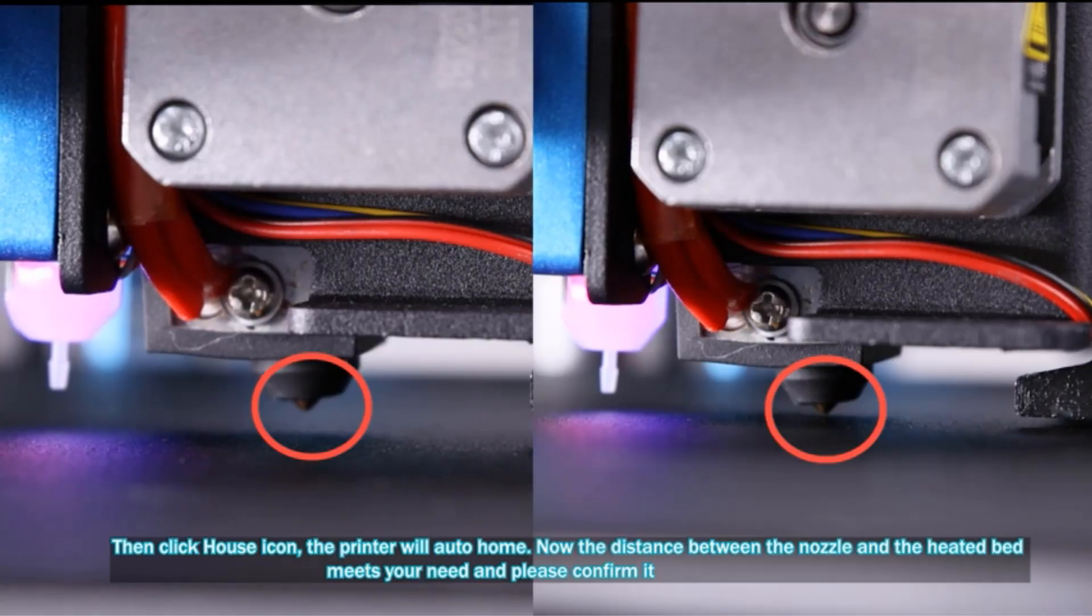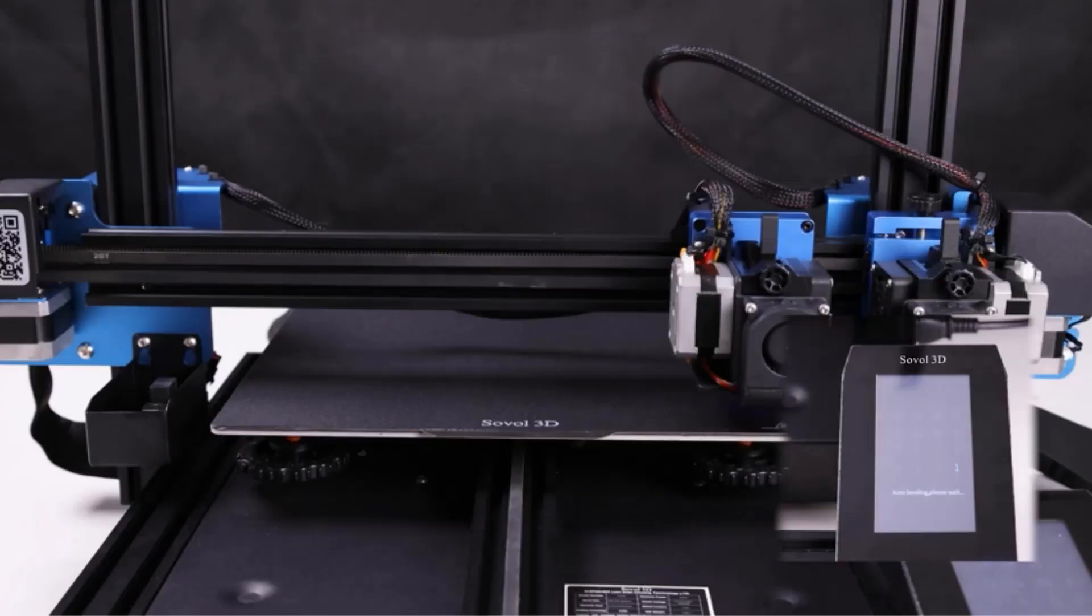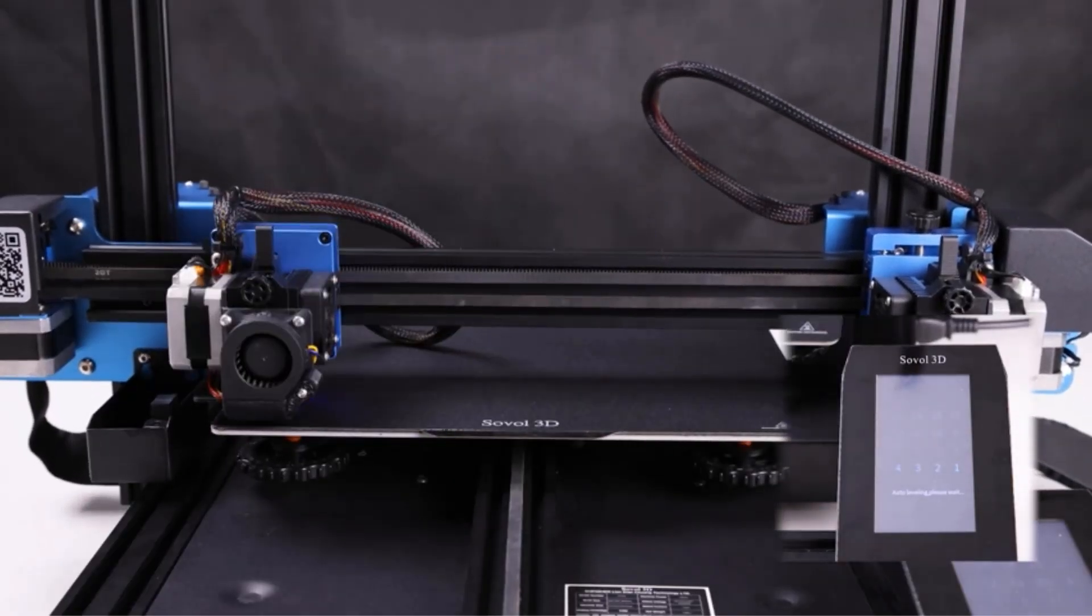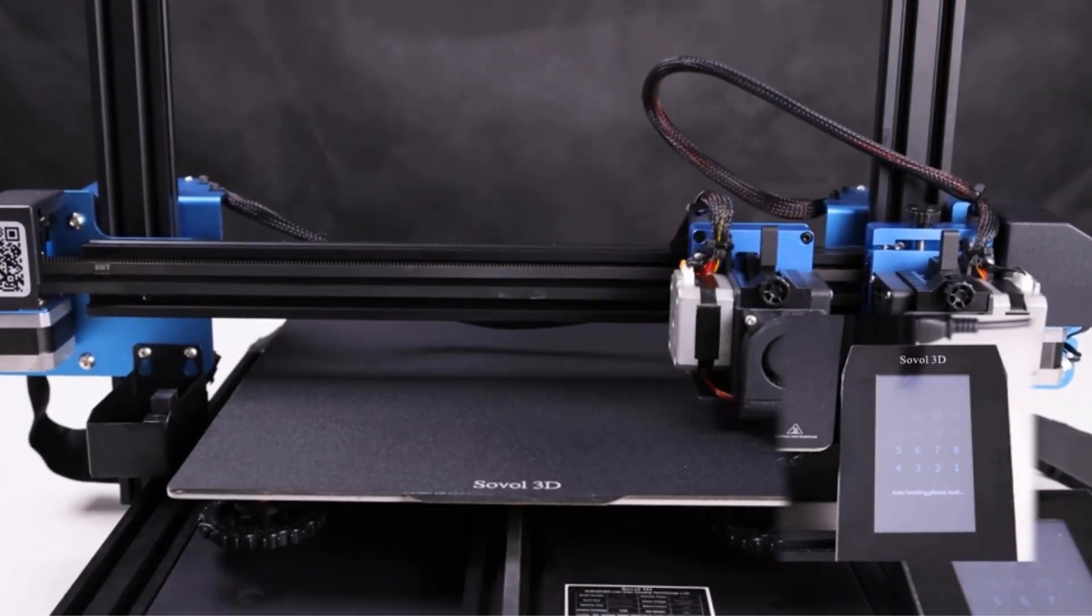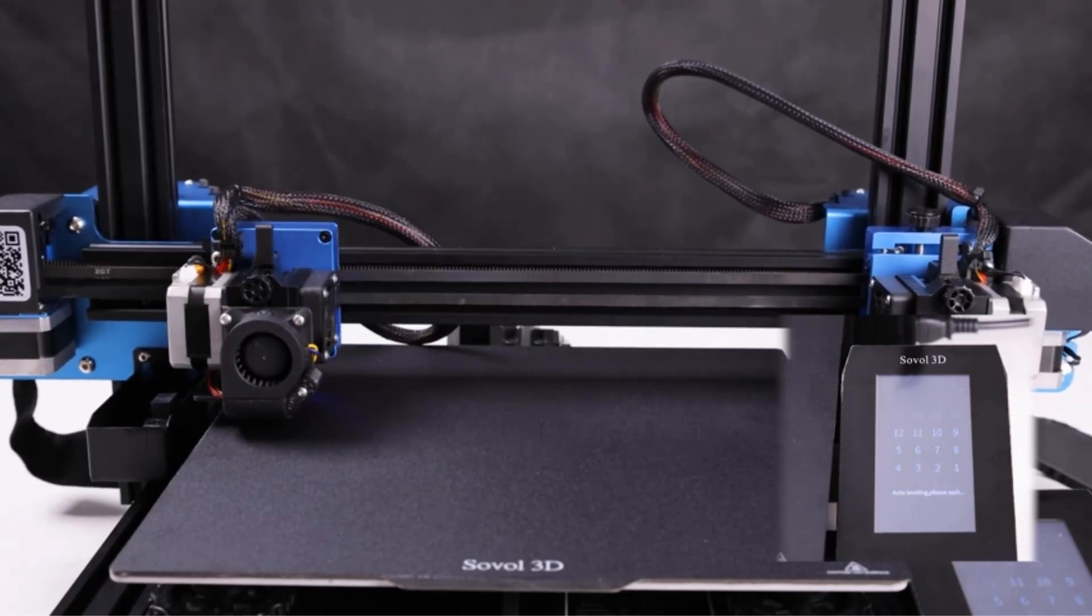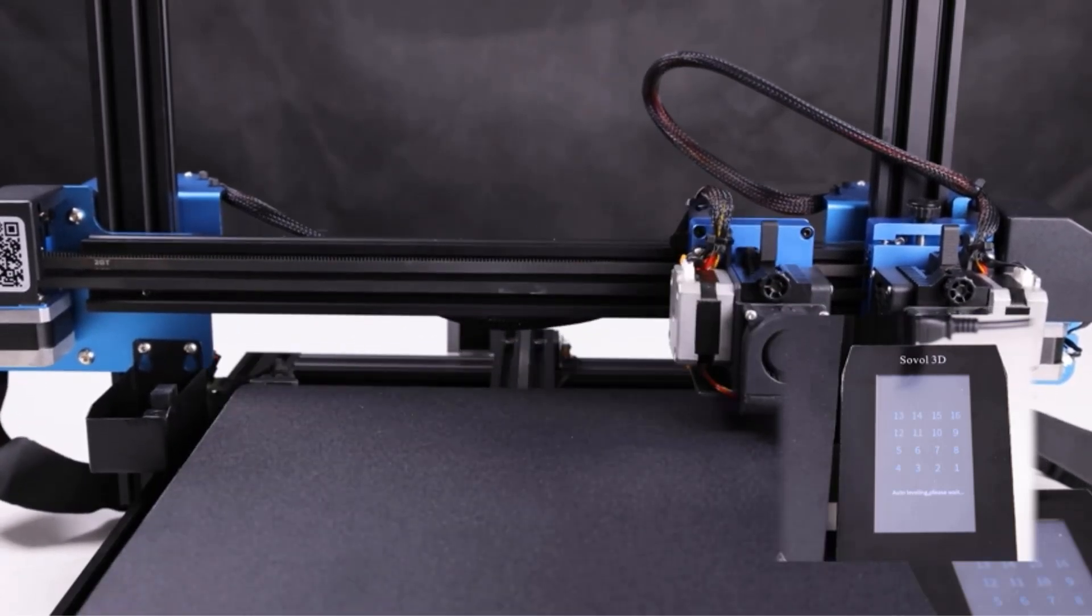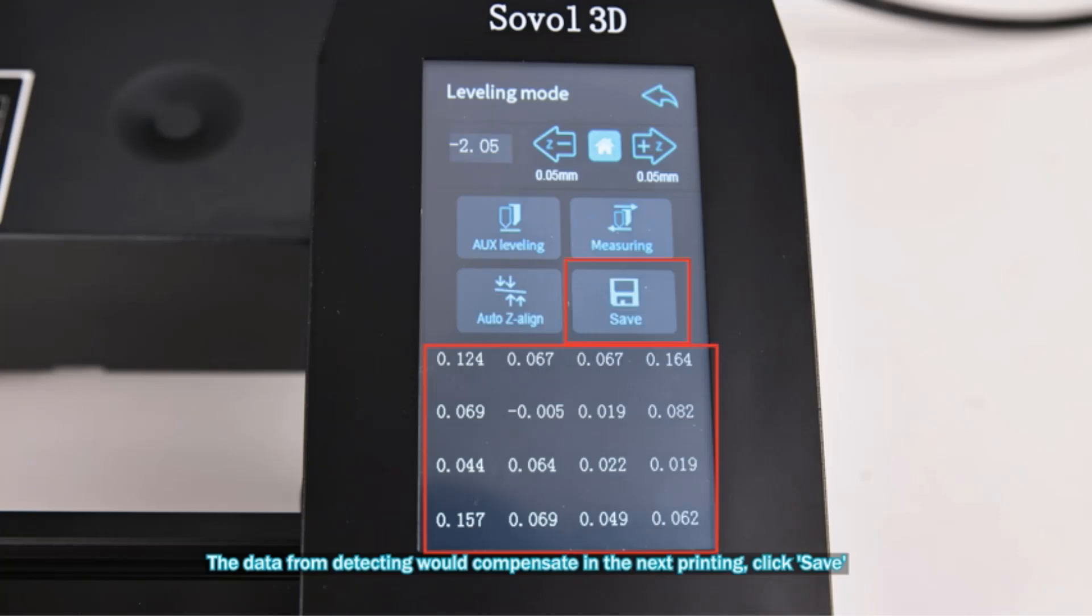One standout feature of the A20M is its resume print function, which safeguards against power interruptions. In the event of a power outage, the printer can resume printing from the last extruder position recorded, saving time and reducing material waste.